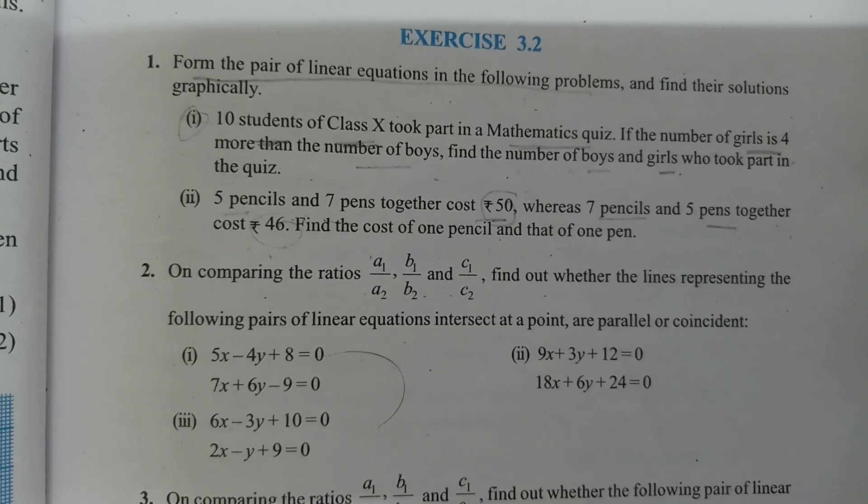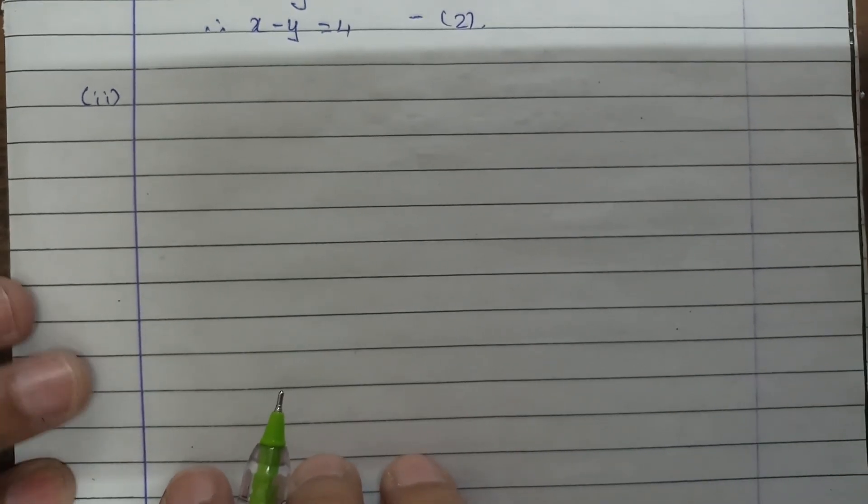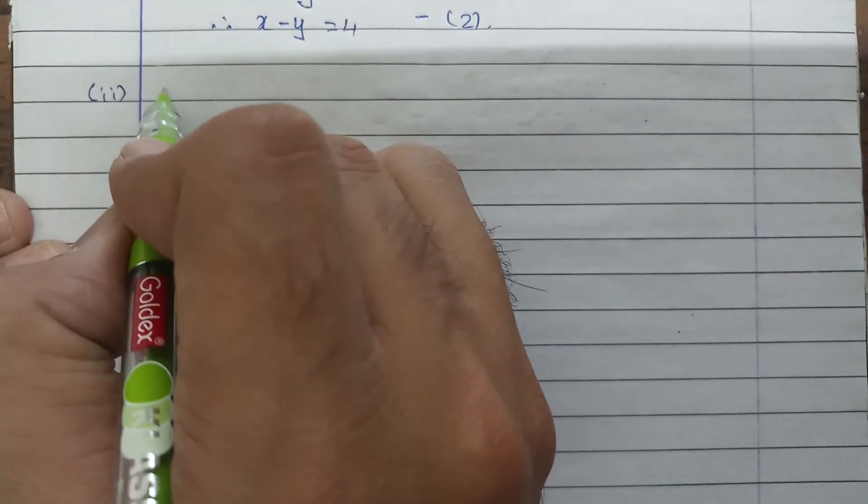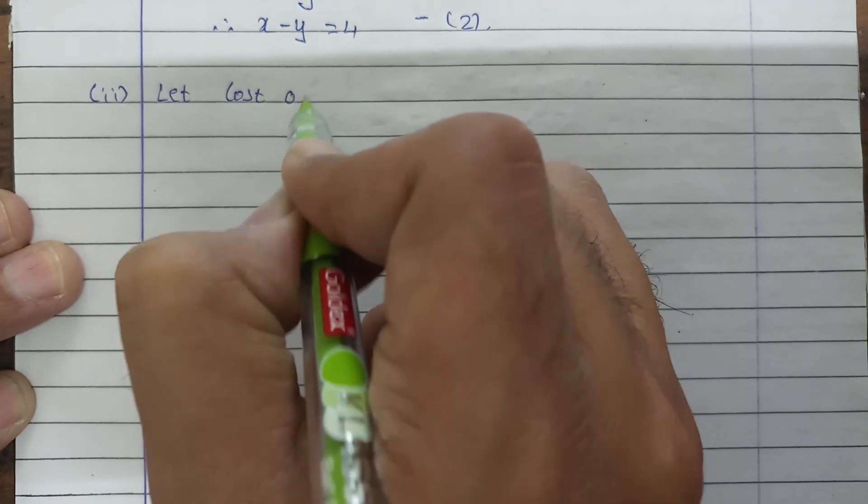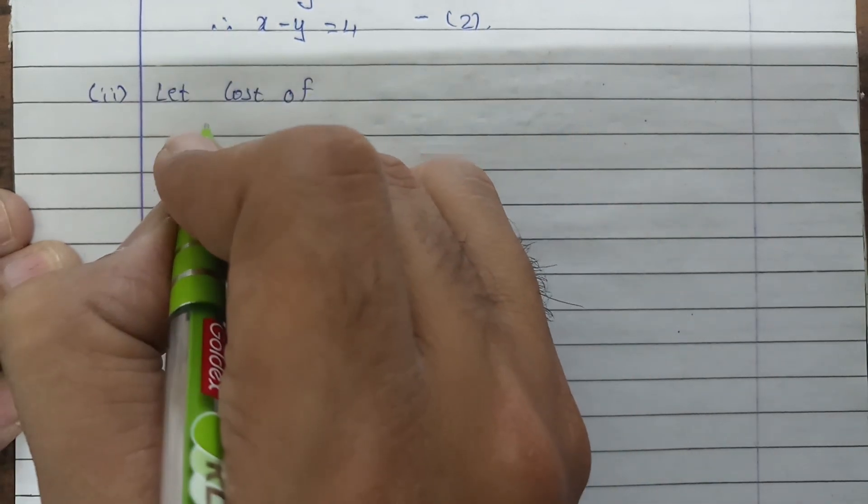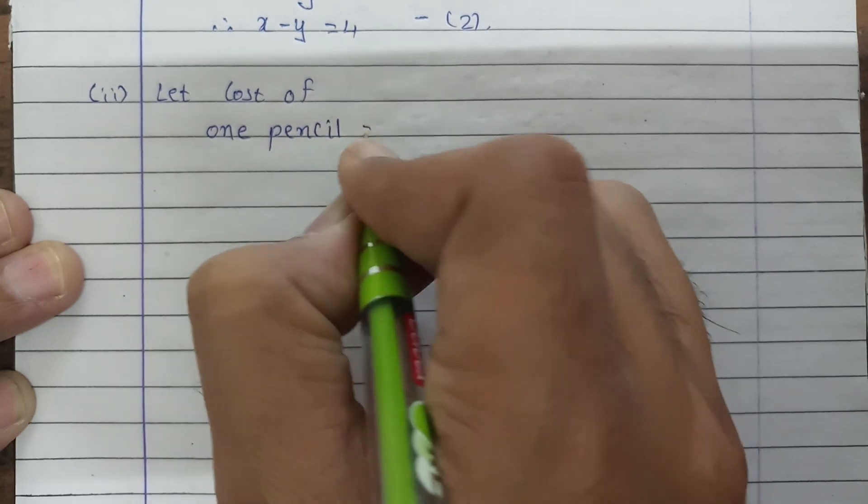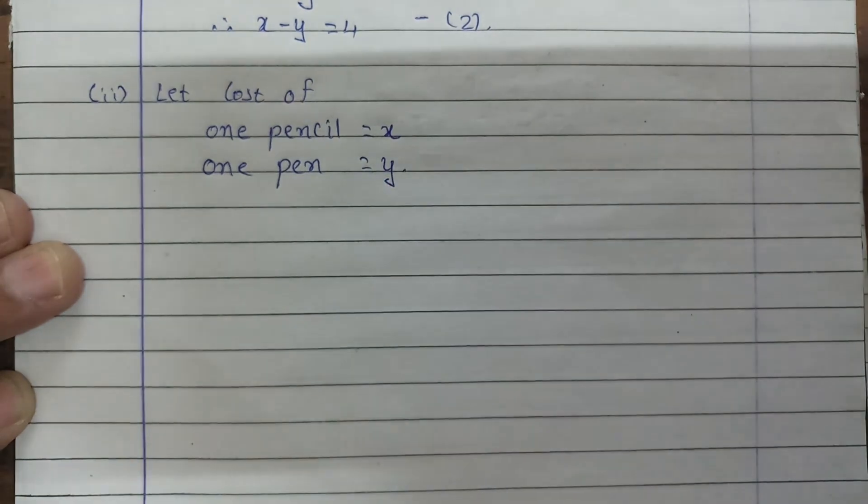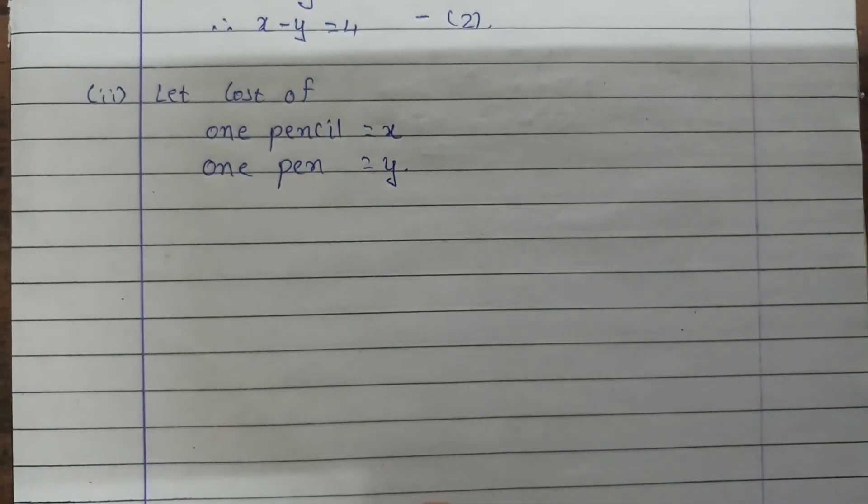Let's see how to make it. First of all, we assume that the cost of one pencil is x and that of one pen is y. One pencil costs x rupees and one pen costs y rupees.